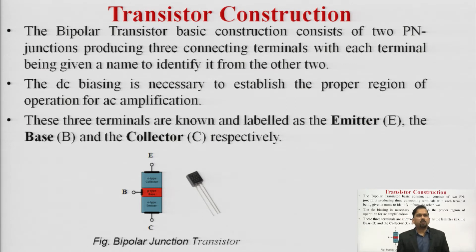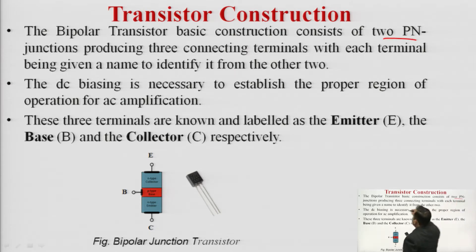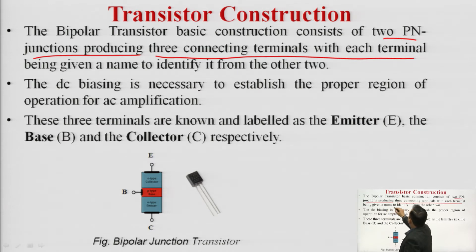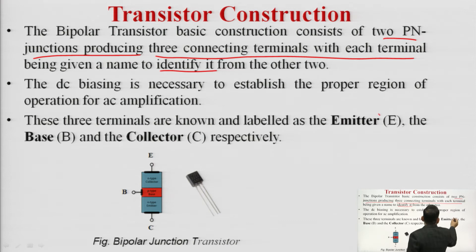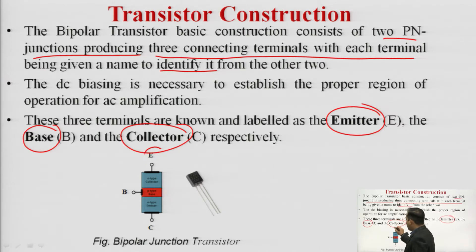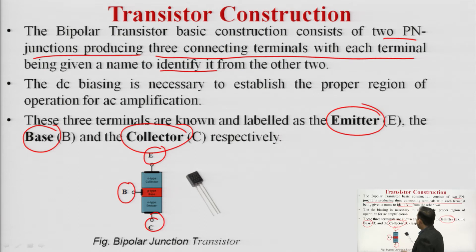The basic transistor construction consists of 2 PN junctions, and as a result 3 connecting terminals, each with a specific name: emitter, base, and collector — represented as E, B, and C. This representation corresponds to a DIP (dual inline packaging) for the transistor.